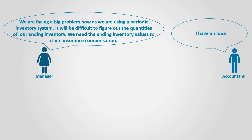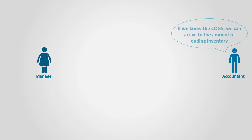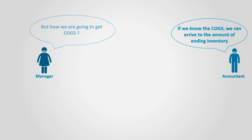But the accountant has an idea. The accountant knows that by knowing the cost of goods sold, it would be possible to arrive at the ending inventory. But the manager is wondering: how are we going to calculate the cost of goods sold?